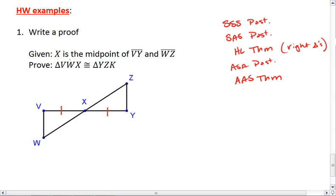Also, since X is also the midpoint of WZ, I know that WX is congruent to XZ, which now gives me two pairs of congruent sides.